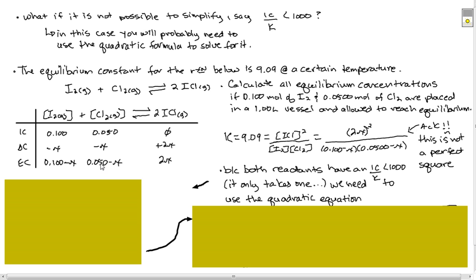If x is going to have any significant change on the initial concentration, we have to use the quadratic equation. So we always check: IC over K. If it's less than 1000, we have to use the quadratic equation. If it's greater than 1000, then we can simplify and pretend that it doesn't make a difference.